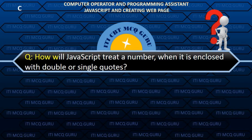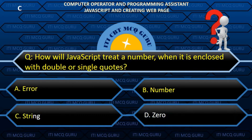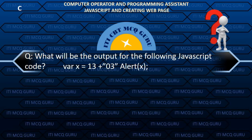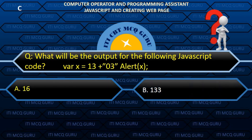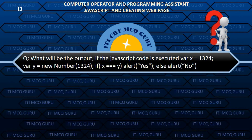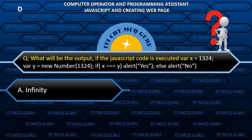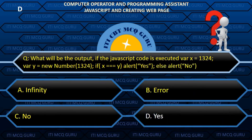How will JavaScript treat a number when it is enclosed with double or single quotes? C. String. What will be the output for the following JavaScript code? var x = 1324; var y = new Number(1324); if (x === y) alert('Yes') else alert('No'). B. No.